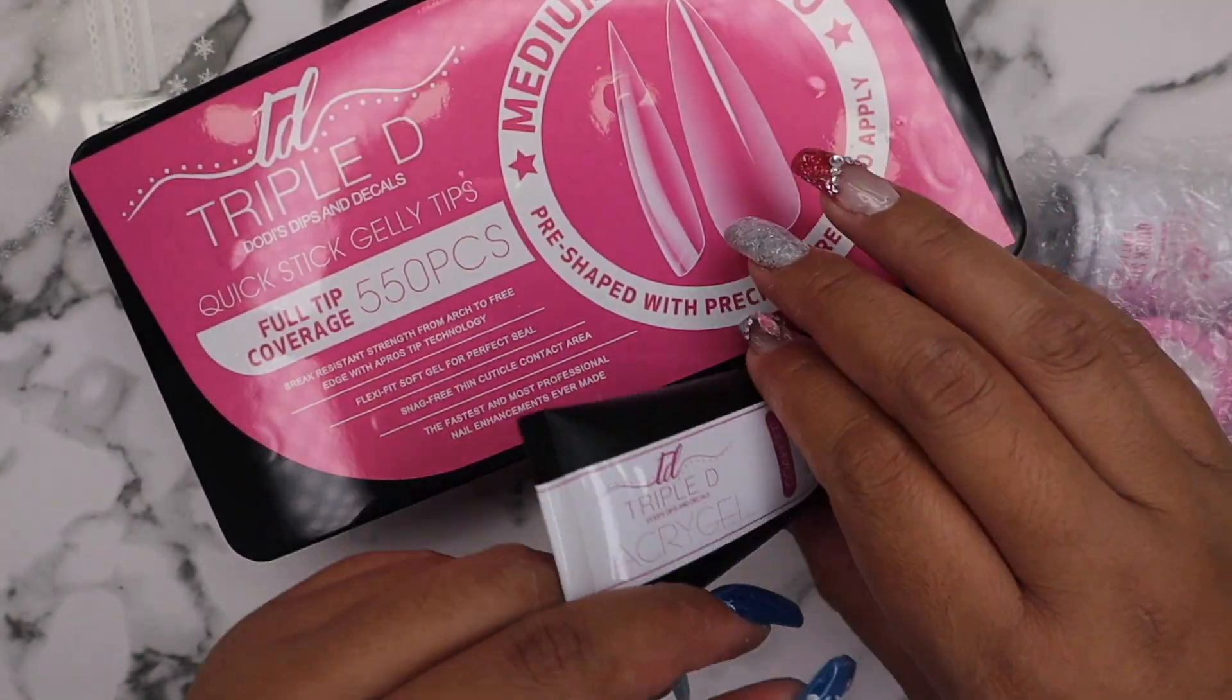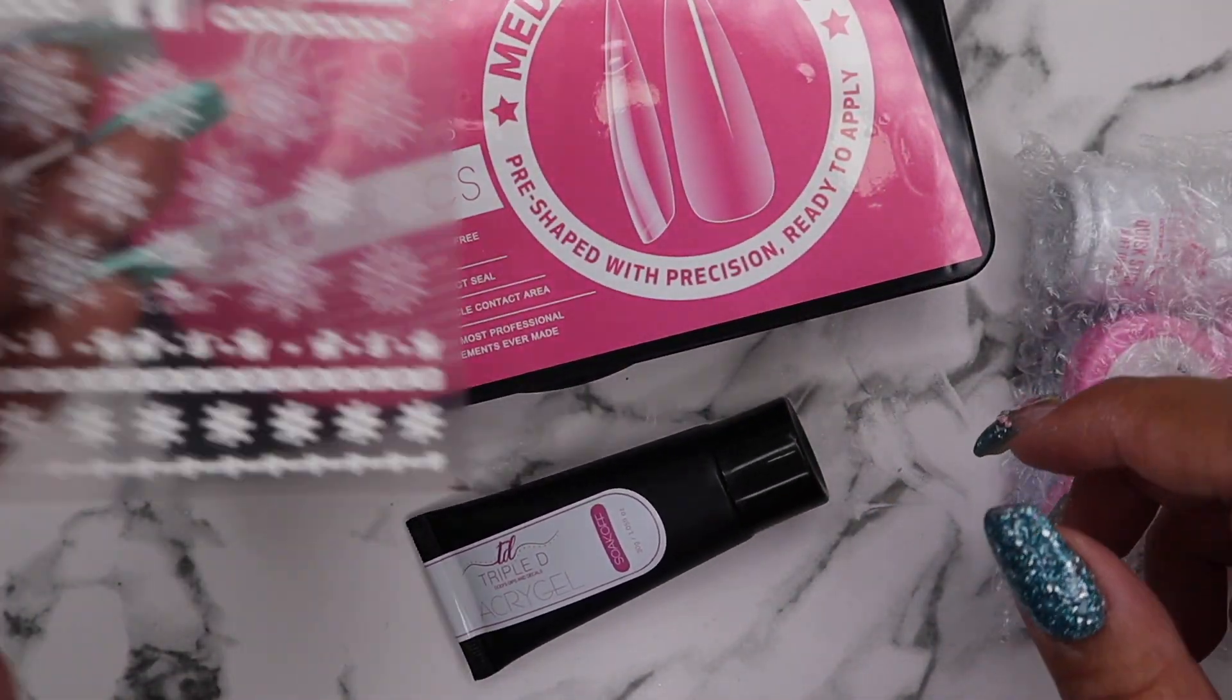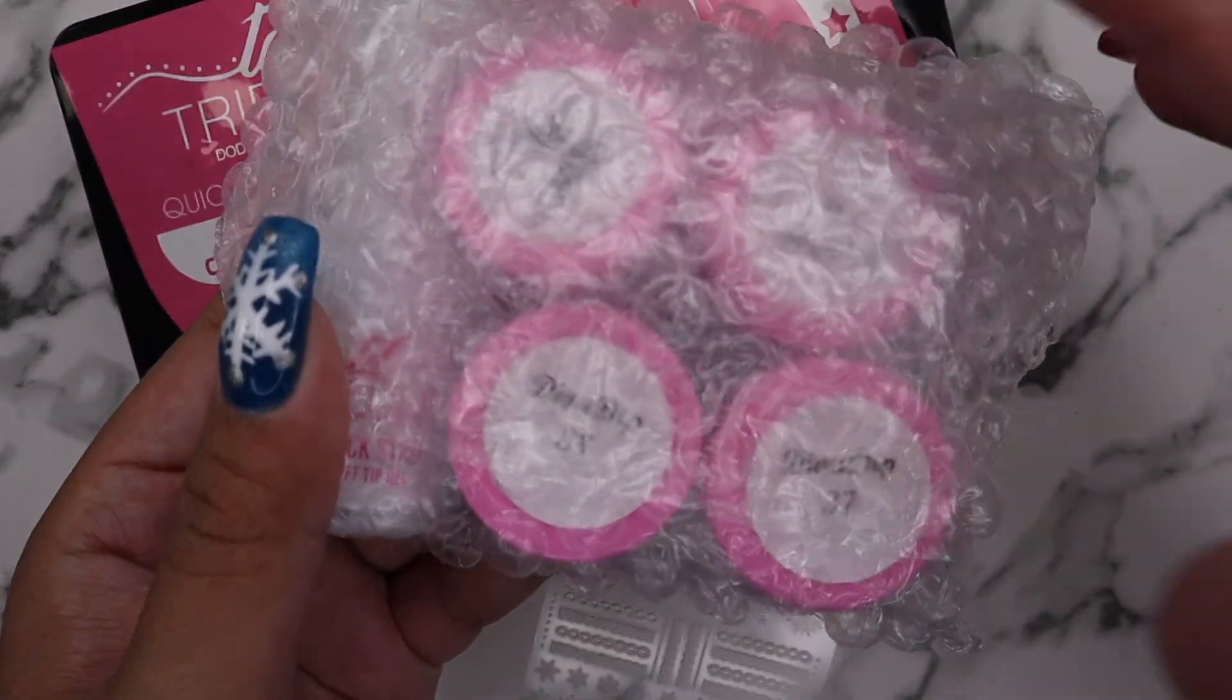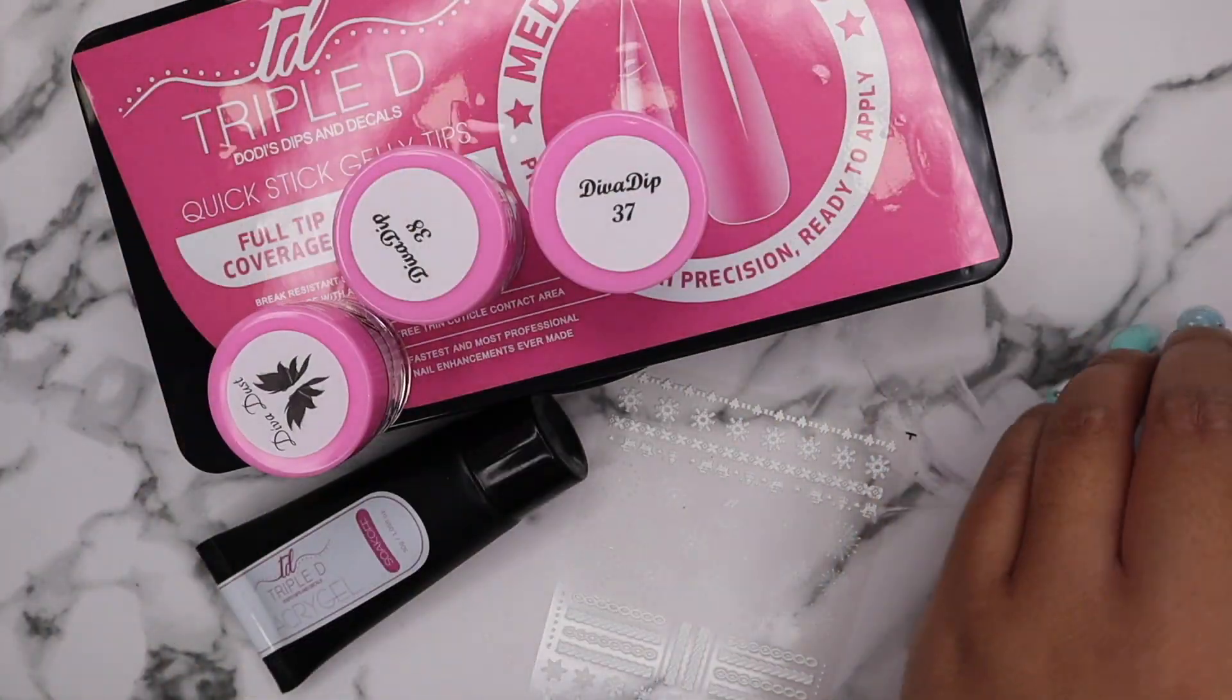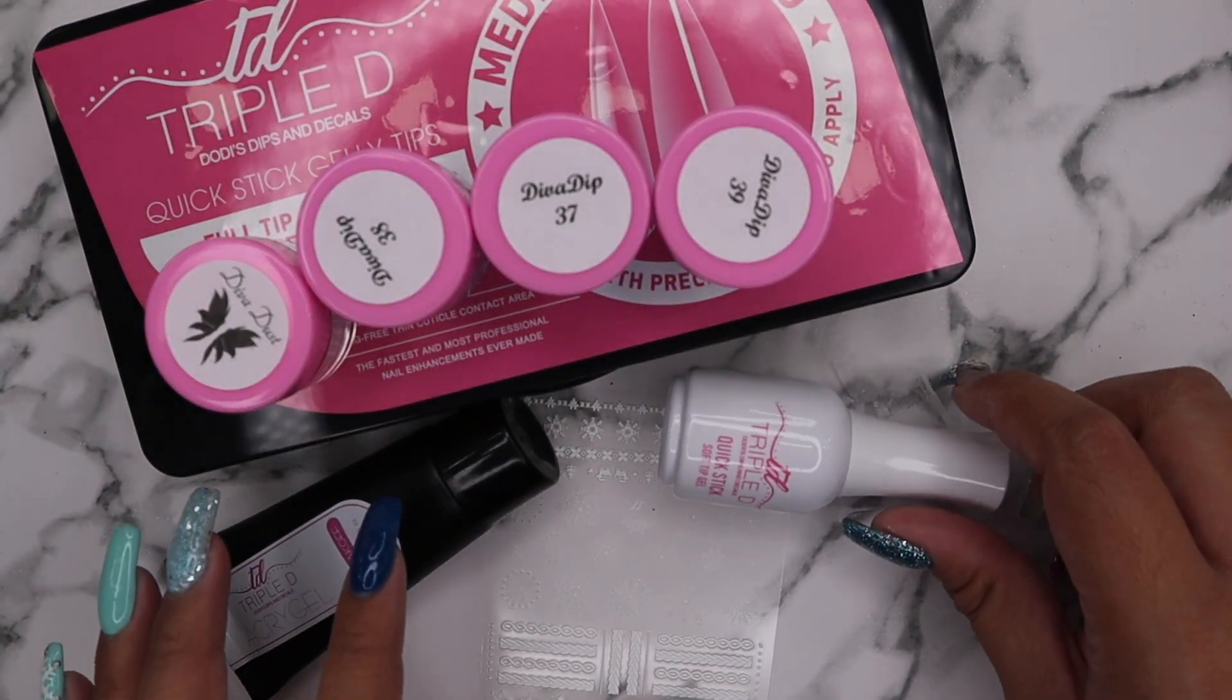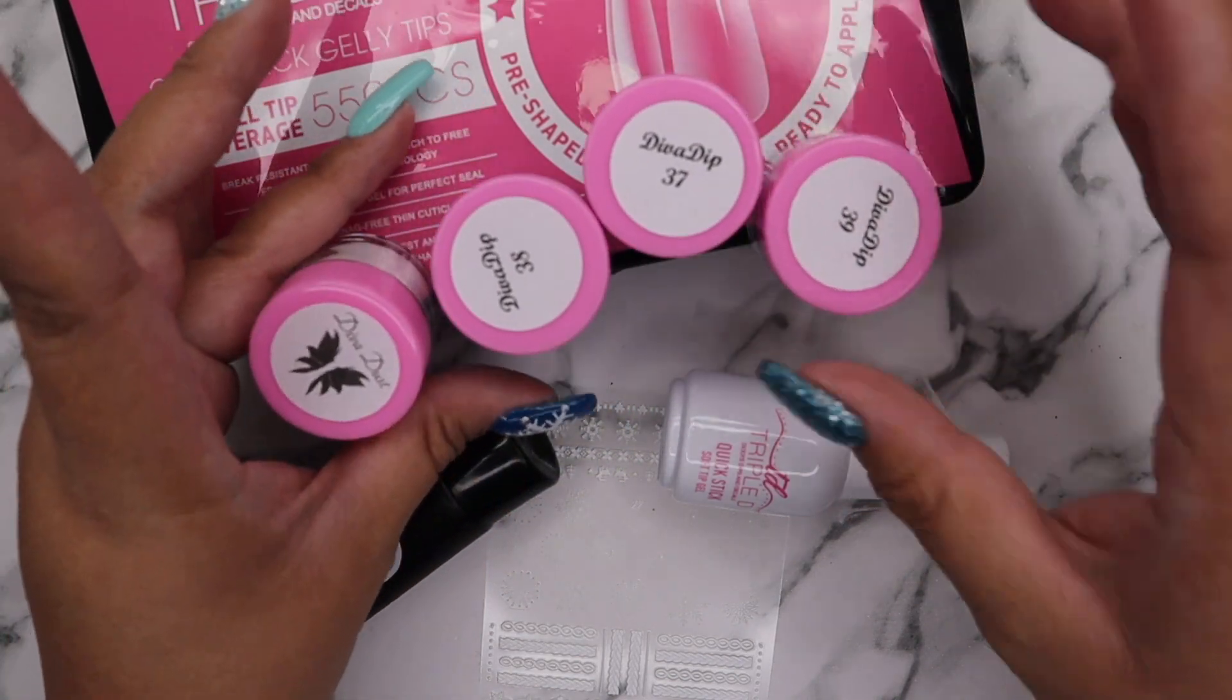You'll also be getting this milky white acry gel which I am so excited about. It also includes stickers, there are a lot of snowflakes and those sweater nail designs. The other bubble wrap includes four dip powders, and this Quick Stick, which is the gel that you'll be using to apply the jelly tips.